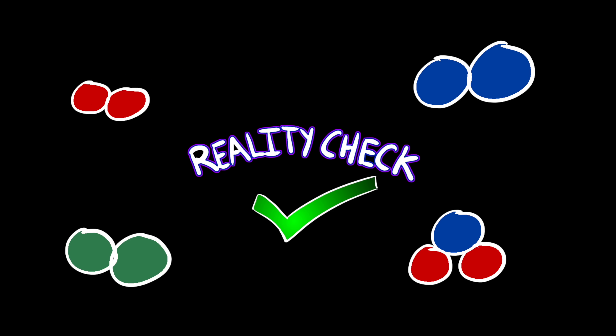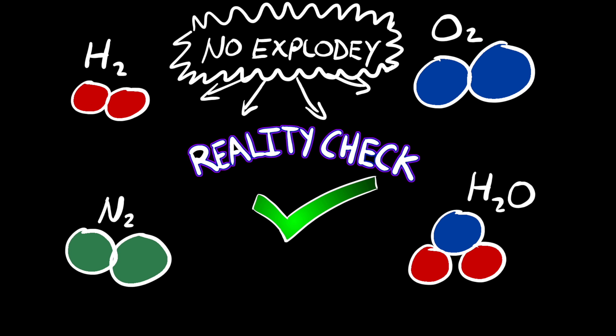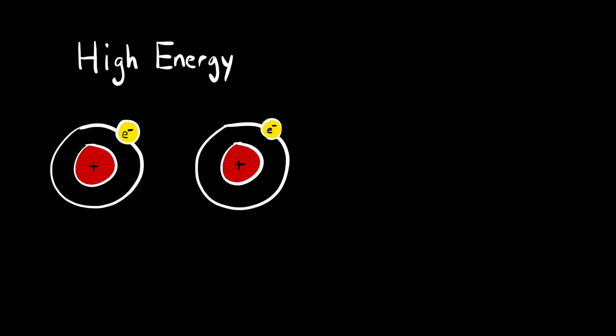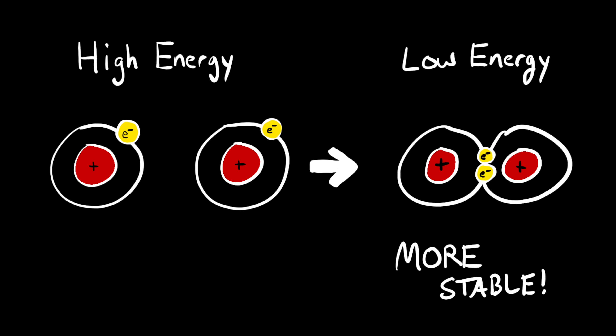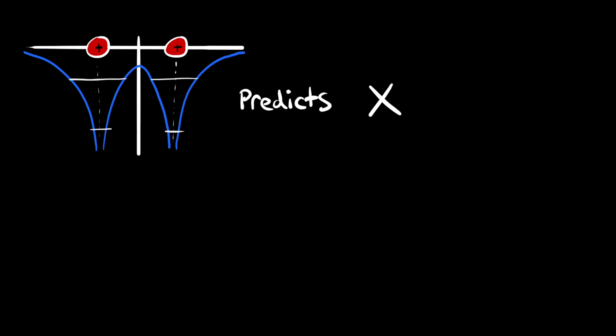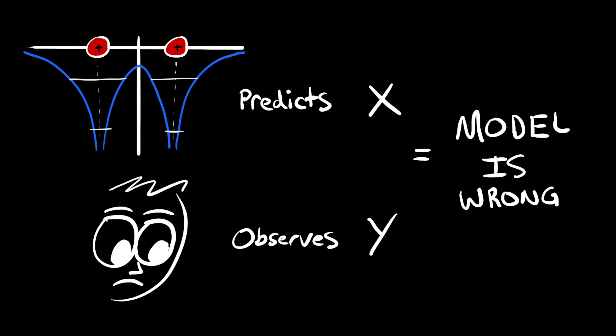Reality check: molecules are all around us. The air we breathe consists mostly of nitrogen and oxygen molecules. Has the air around you exploded? No. Then it must be that covalent bonds are more stable than the constituent atoms, implying that the formation of covalent bonds results in a lower energy state. So when a mathematical model doesn't agree with observation, the model must be incomplete. What are we missing?